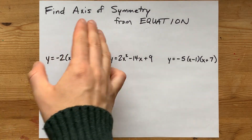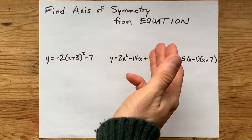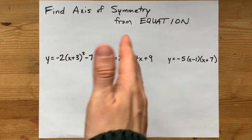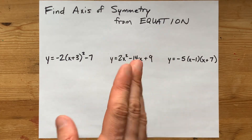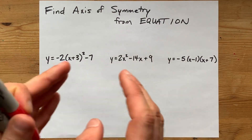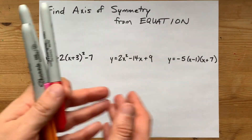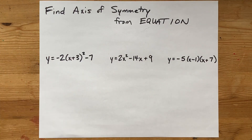How can you find the axis of symmetry of a parabola from its equation? Well, first you have to figure out which of the three equations of a parabola you have.